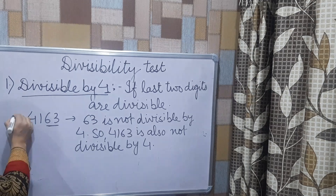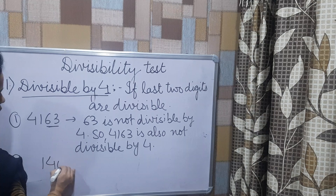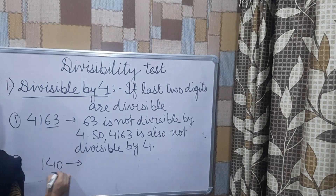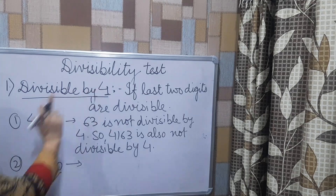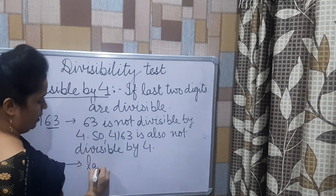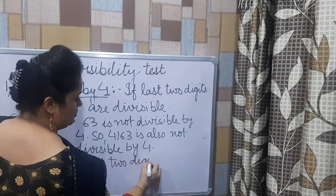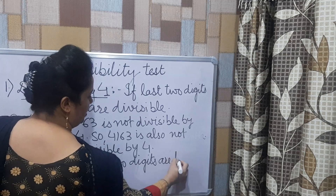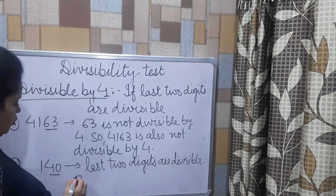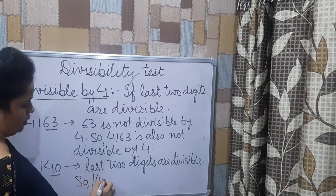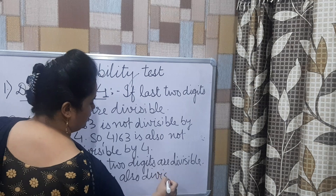Let us discuss one more example. Suppose if I have the number 140, the last two digits are 40. As you know, 40 is a multiple of 4 — 4 tens are 40. So the last two digits are divisible by 4, meaning 140 is also divisible by 4.